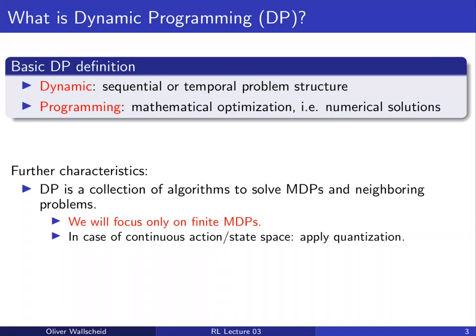In this course, we will completely focus on applying DP to finite MDP problems with a finite amount of states and actions. In the case of continuous action and state spaces, the DP solutions we discuss today cannot be directly used, so we would have to apply quantization to that problem space. However, as announced in the first two lectures, we will use deep artificial neural networks or other function approximators in the second part of the lecture series to address continuous state and action spaces without requiring quantization.